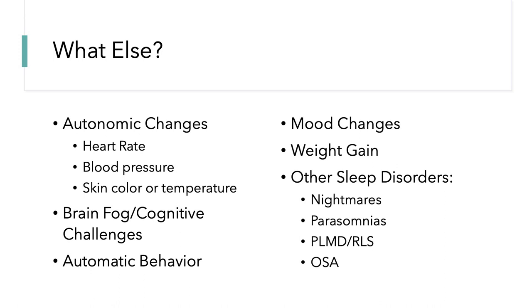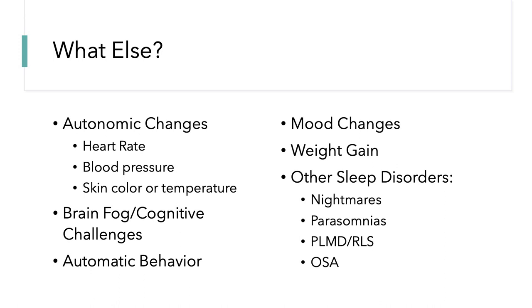Beyond sleep symptoms, other features are extraordinarily impactful day to day. One area that has humbled me recently is the prevalence of autonomic changes in individuals with central disorders of hypersomnolence — dysautonomia, where the autonomic nervous system controlling heart rate, blood pressure, sweating, and body temperature becomes dysregulated. These patients may be diagnosed with POTS, and experience heart rate changes, blood pressure changes, and skin color or temperature changes. Medications can either enhance or sometimes benefit these symptoms.